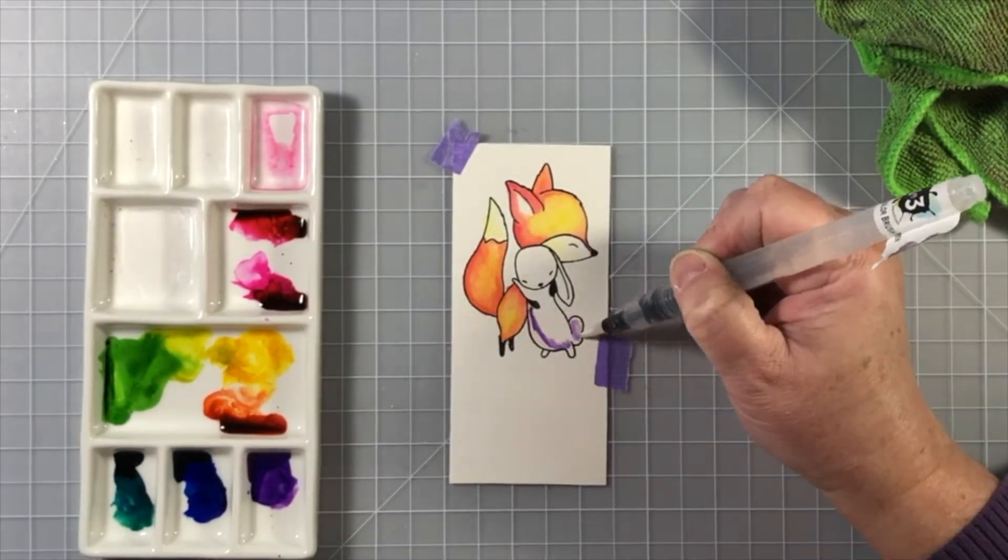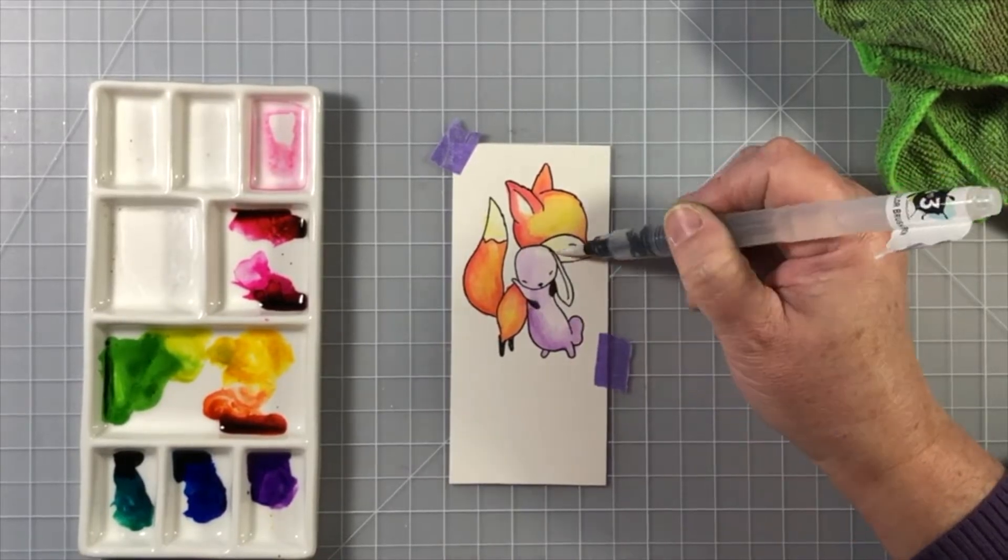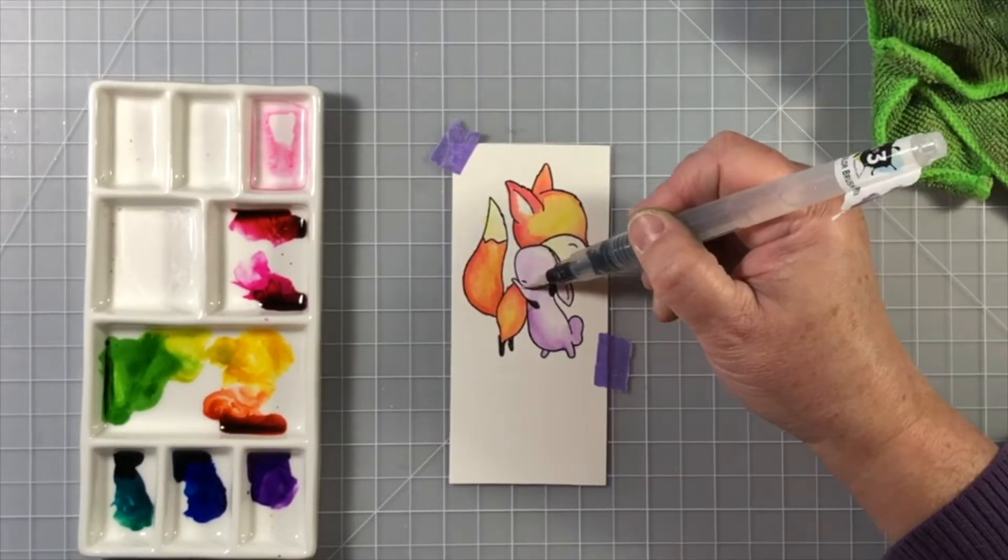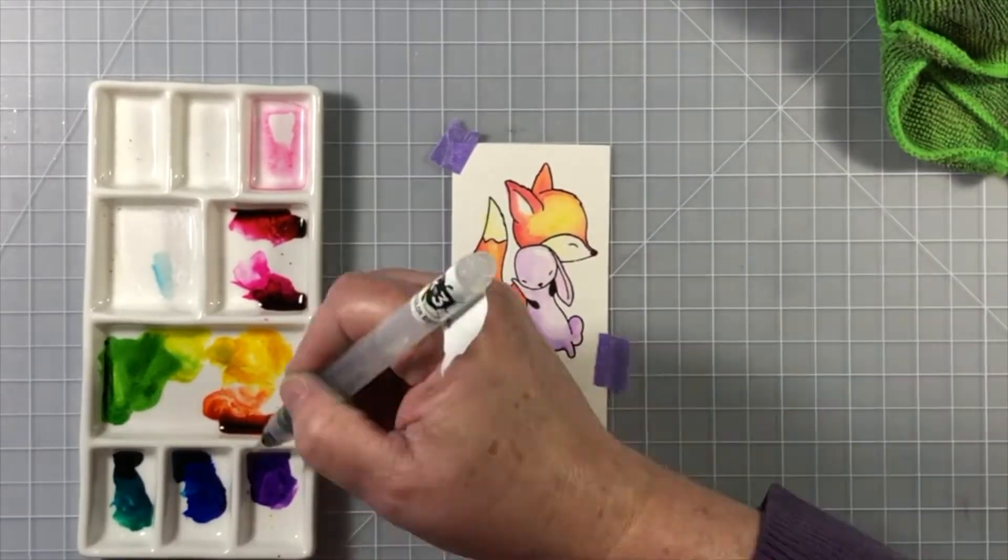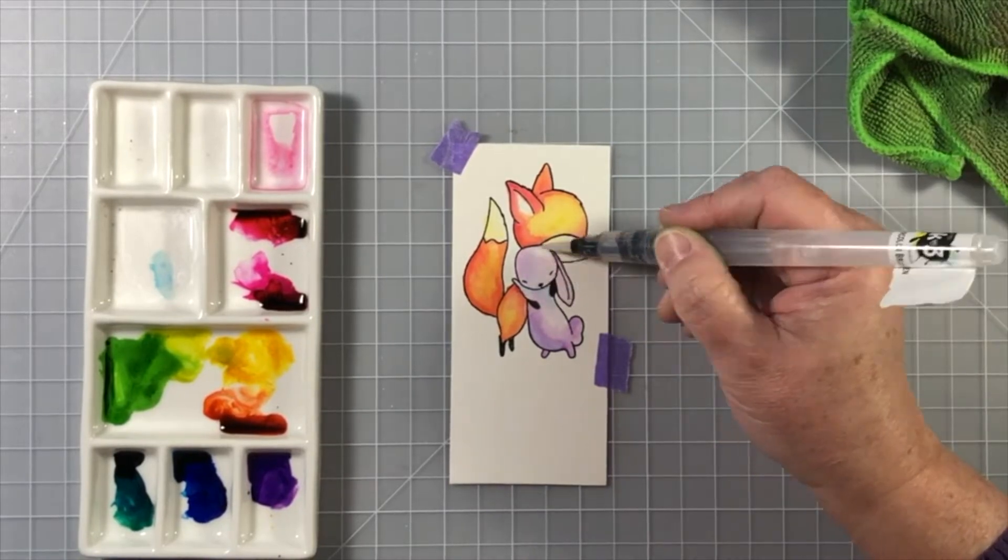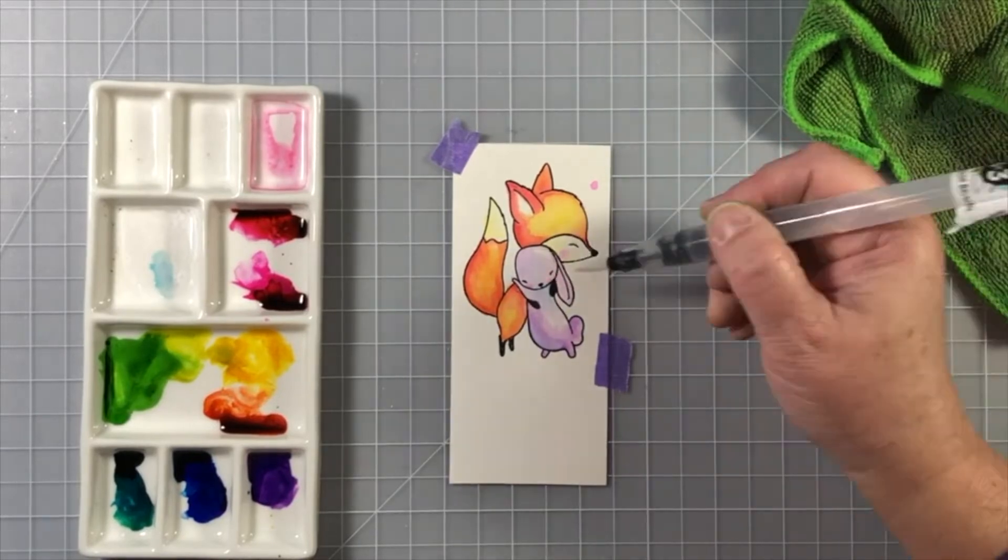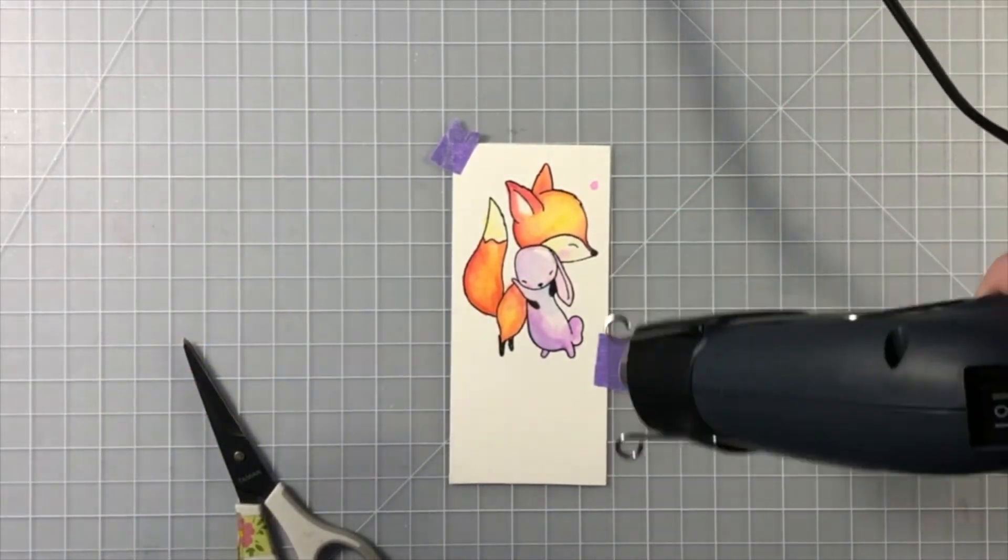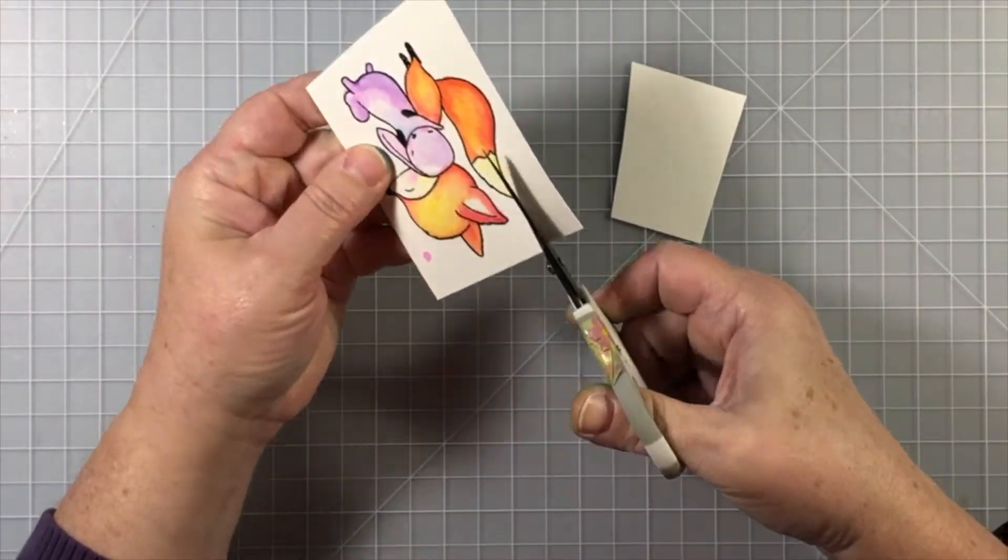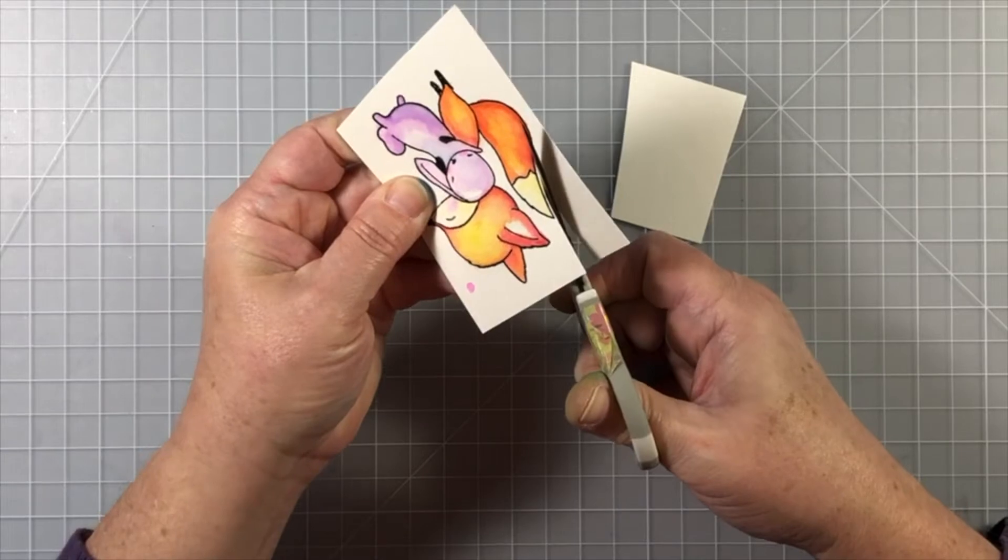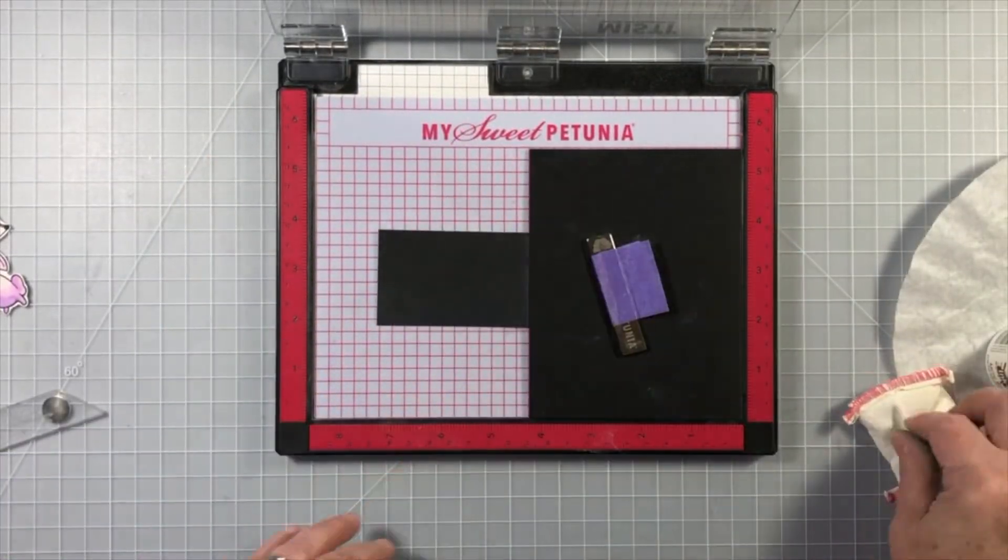So I'm just using a couple of colors on each one of the images. The fox has a yellow base, and then I added orange and then red around the edges. The little bunny has a purple base. Well, first I added white and then purple and then blue into the shadow areas, and I added little pink cheeks for both of them. Super, super simple.